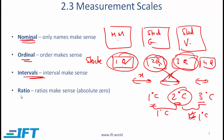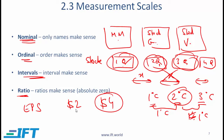The most precise measure is the ratio scale, where we have order, intervals make sense, and the ratio also makes sense. The classic example would be earnings per share of a given company. If EPS is $2 in the first quarter and $4 in the second quarter, we can say earnings were 2 times more in Q2. With a ratio scale, there will also be an absolute zero — EPS of 0 means the absence of any earnings — and you can also have negative earnings.